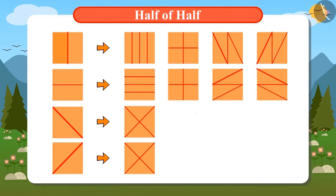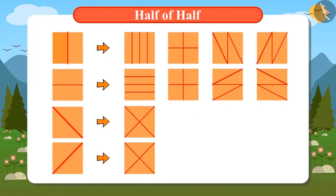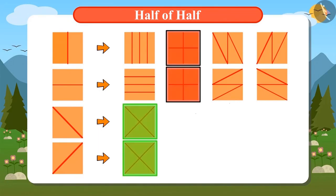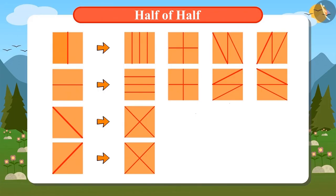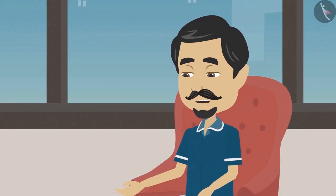Tell me, are these all correct? Let me see. Hey, you have divided the field into four equal parts in many ways. But see, some of these look alike. Now we can choose one method among these for our crops. Tell me, which among these looks good to you? I like this one the best. And I like this one because it is so simple. But we will divide the field whichever way you like. Thank you, Daddy.